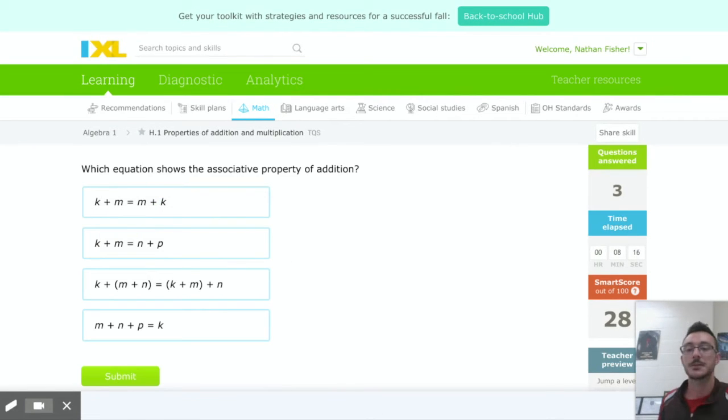Next, which equation shows the associative property? So associative is basically—you can kind of think about the word associate. It doesn't matter if you're only doing addition or only doing multiplication. As long as you're within an operation like that, it doesn't matter if you do the first two things first or if you add the last two numbers first, or if you multiply the first two numbers or something like that.